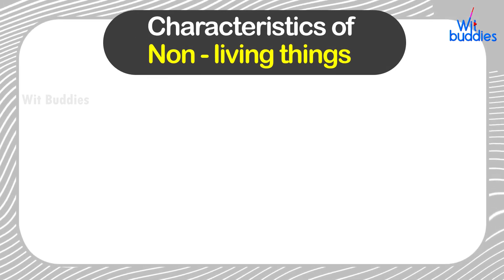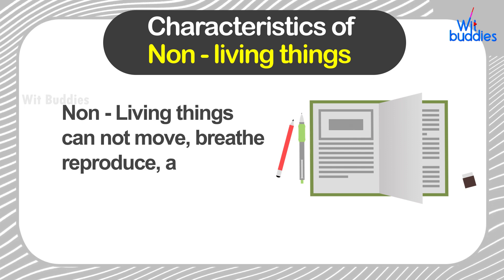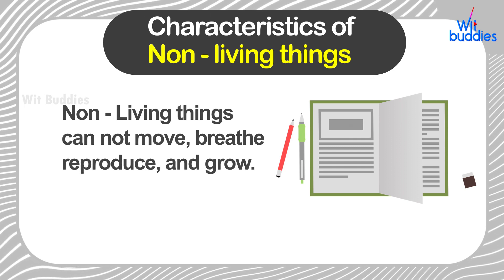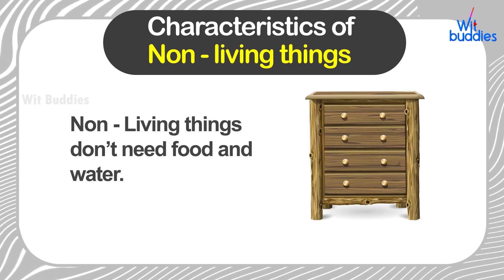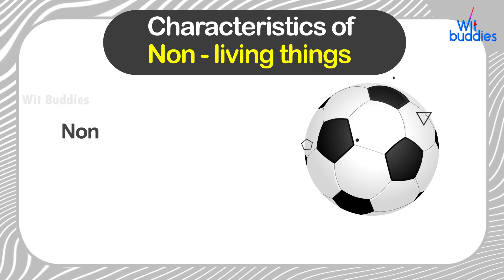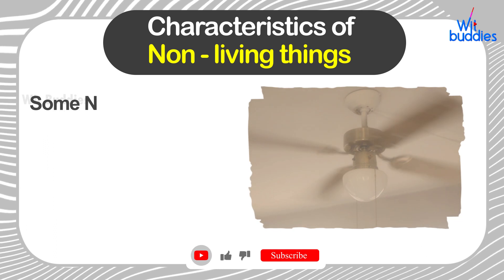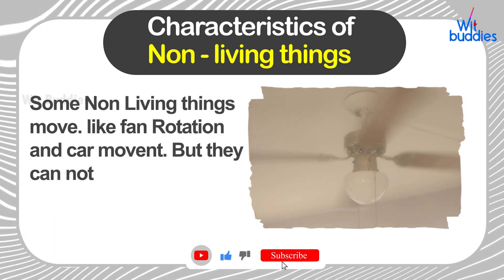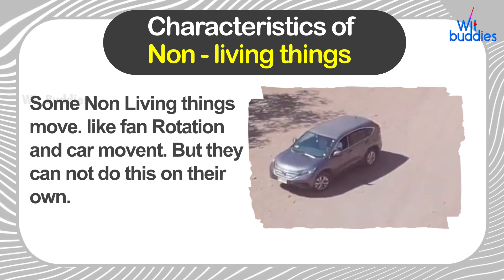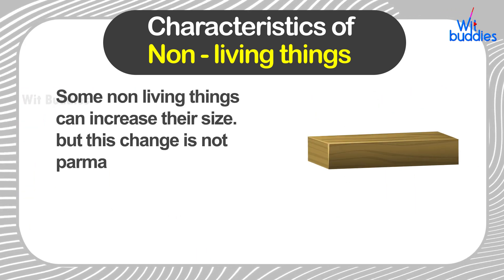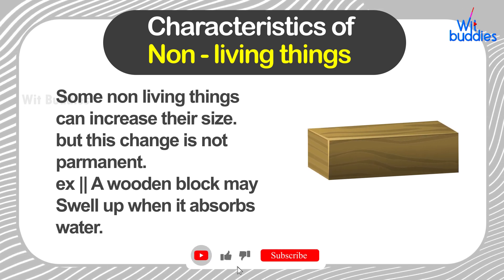Characteristics of non-living things: Non-living things cannot move, breathe, reproduce, or grow. Non-living things don't need food and water. They don't have any feelings. Some non-living things move, like fan rotation and car movement, but they cannot do this on their own. Some non-living things can increase their size, but this change is not permanent.